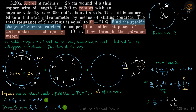If a sudden stoppage of the coil makes a charge Q flow through the galvanometer, we need to find the specific charge of current carriers — that is the ratio e/m, because current carriers are electrons. This is basically an experimental setup to determine the value of specific charge. You take a coil, rotate it, and when you suddenly stop, you observe how much charge passes through the galvanometer, and from that we calculate the specific charge.